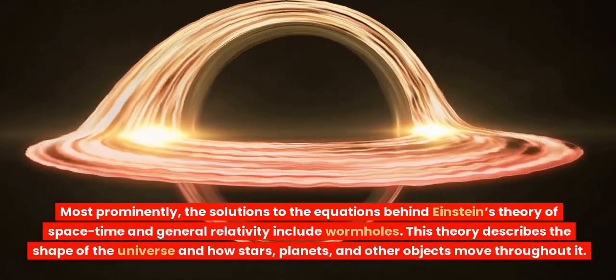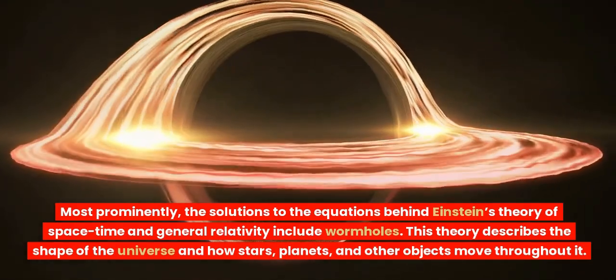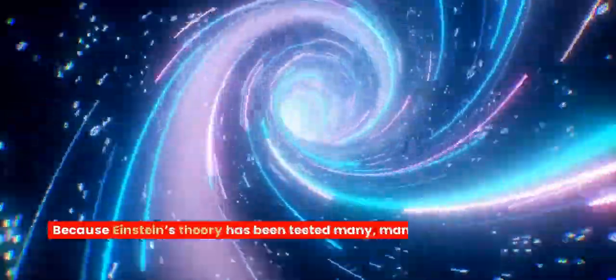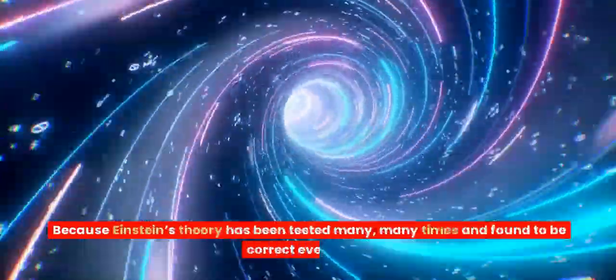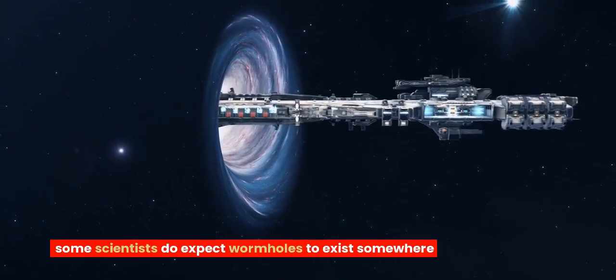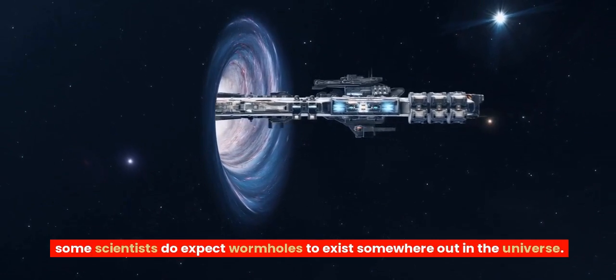This theory describes the shape of the universe and how stars, planets, and other objects move throughout it. Because Einstein's theory has been tested many, many times and found to be correct every time, some scientists do expect wormholes to exist somewhere out in the universe.